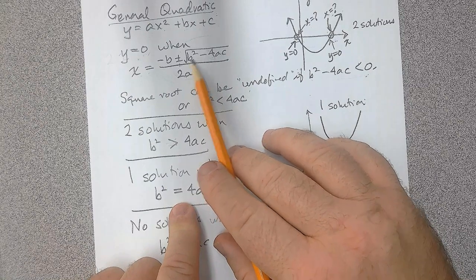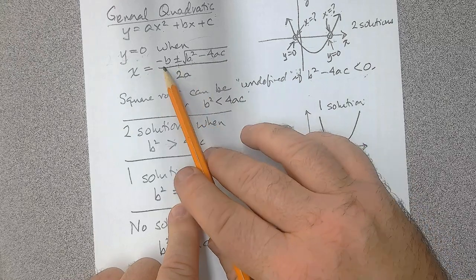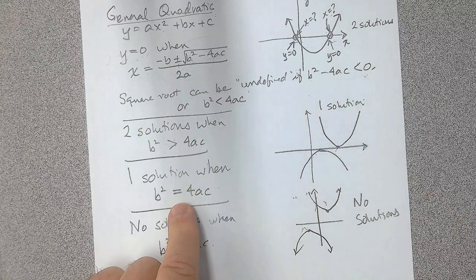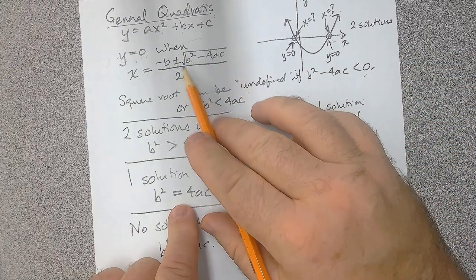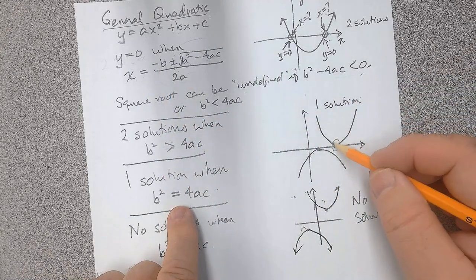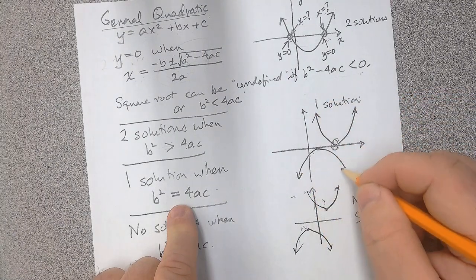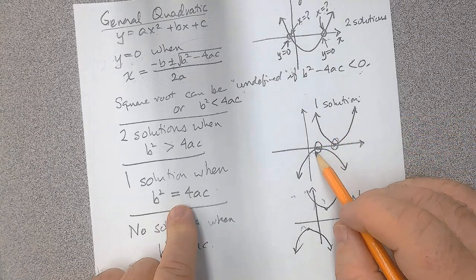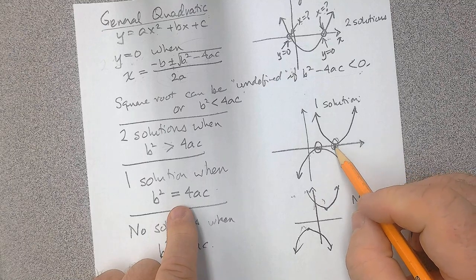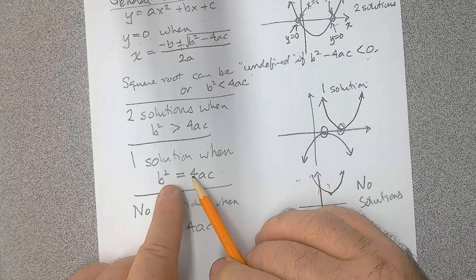What about when b squared equals 4ac? We'd be subtracting a number from itself, getting zero under the square root. Adding or subtracting zero from negative b over 2a leaves it unchanged, so we get one answer instead of two. This is the scenario where a parabola — concave up or concave down — simply grazes the x-axis at exactly one point, its vertex. That's when b squared equals 4ac: one solution.